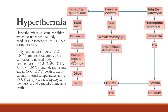Hyperthermia is an acute condition that occurs when the body produces or absorbs more heat than it can dissipate. The normal temperature is around 36–37°C. Above 40°C the person can still survive, but exceeding 40°C becomes critical. At 41°C, brain death will occur; at 45°C, death is nearly certain; and at internal temperatures above 50°C, rigidity in muscles and immediate death will occur.